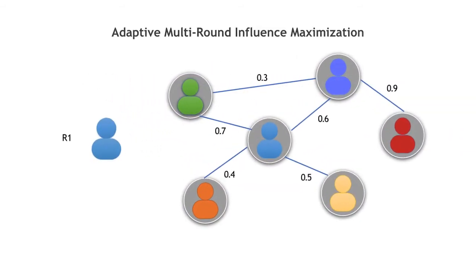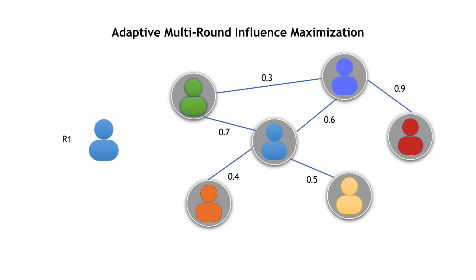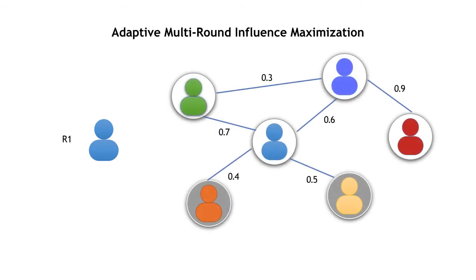Next, let's talk about the adaptive setting. In the adaptive setting, we choose the seed node of the first round the same as in the single round model. We wait to see the result of the first round and use it for the node selection of the second round.